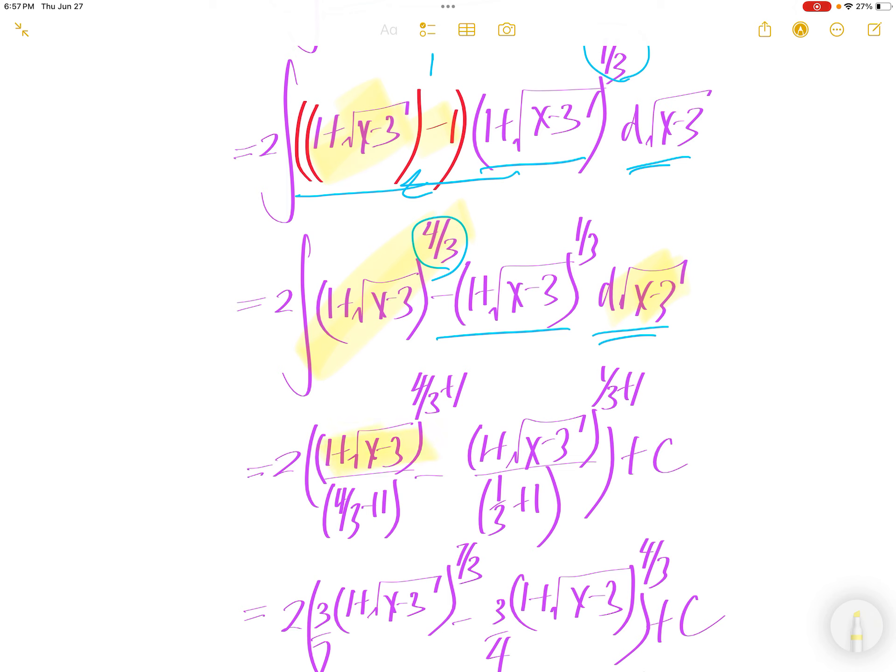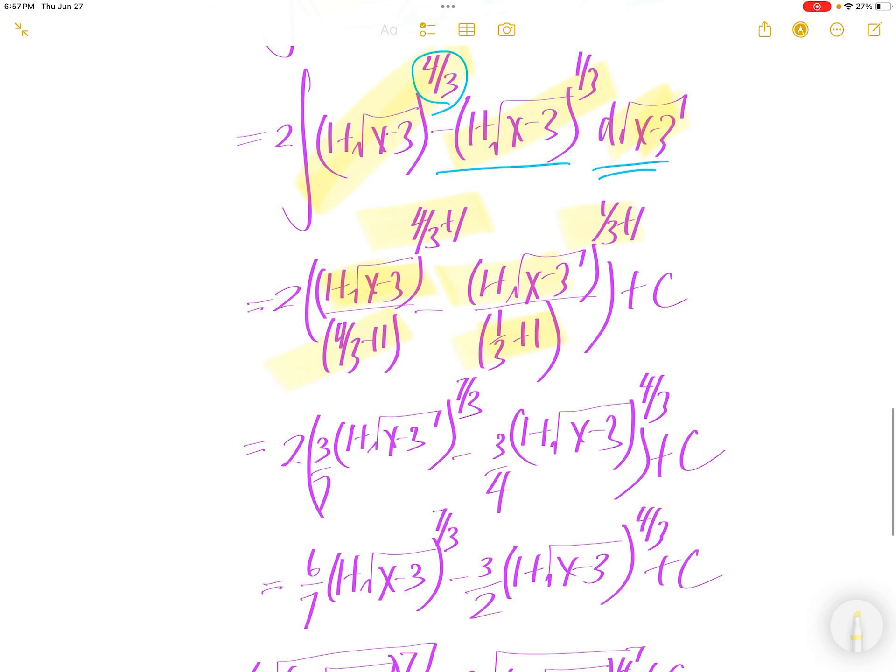4 over 3 plus 1 divided by the same exponent down here. Integral of that is 1 plus square root x minus 3 to the power of half plus 1 divided by the same exponent.